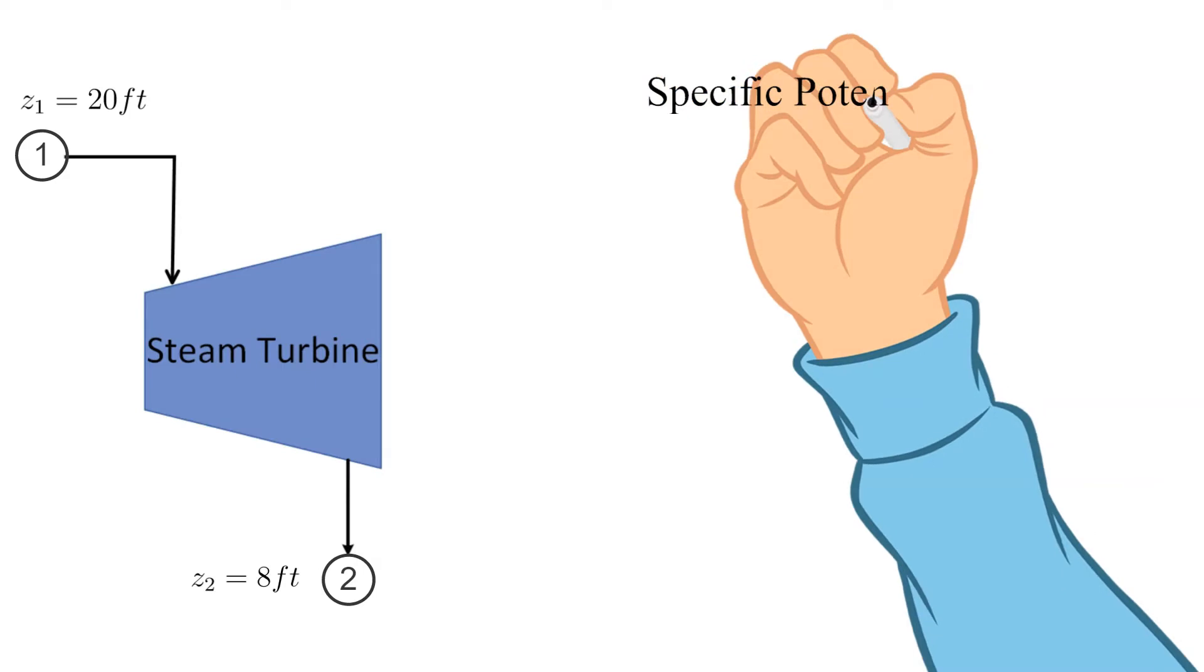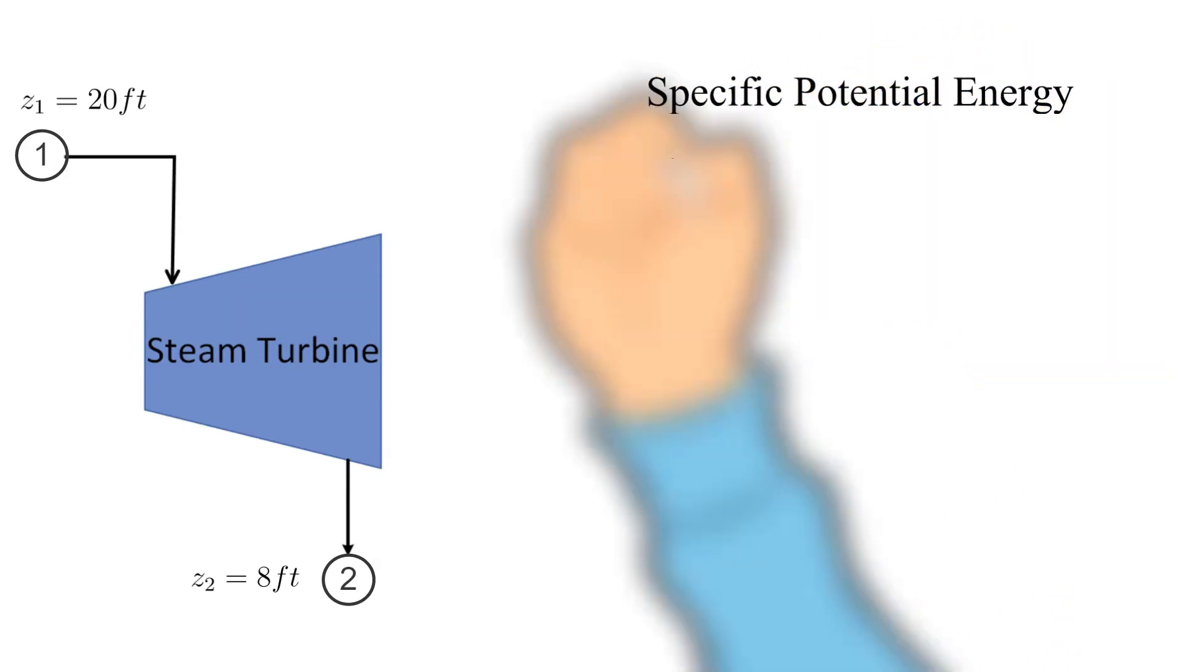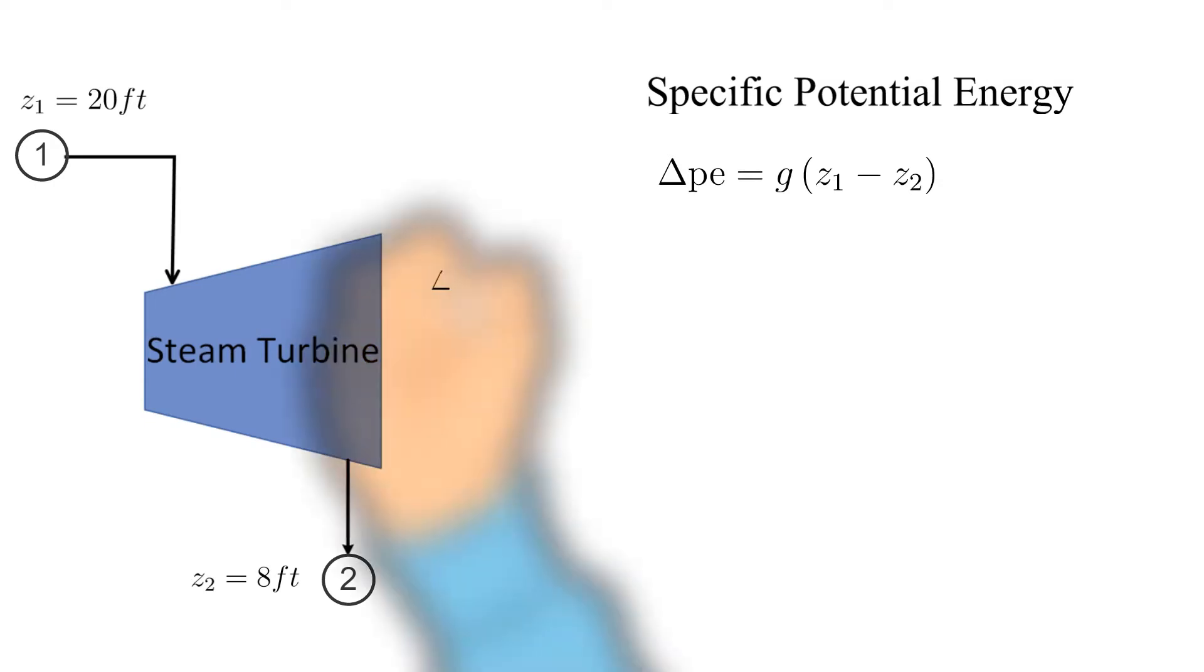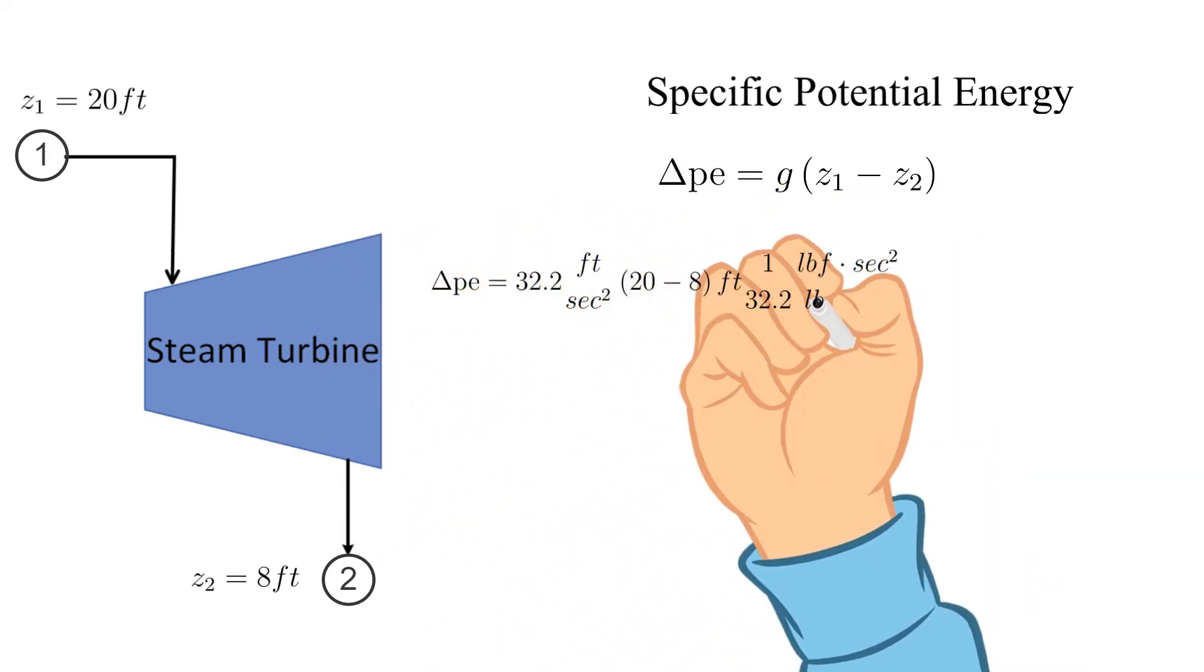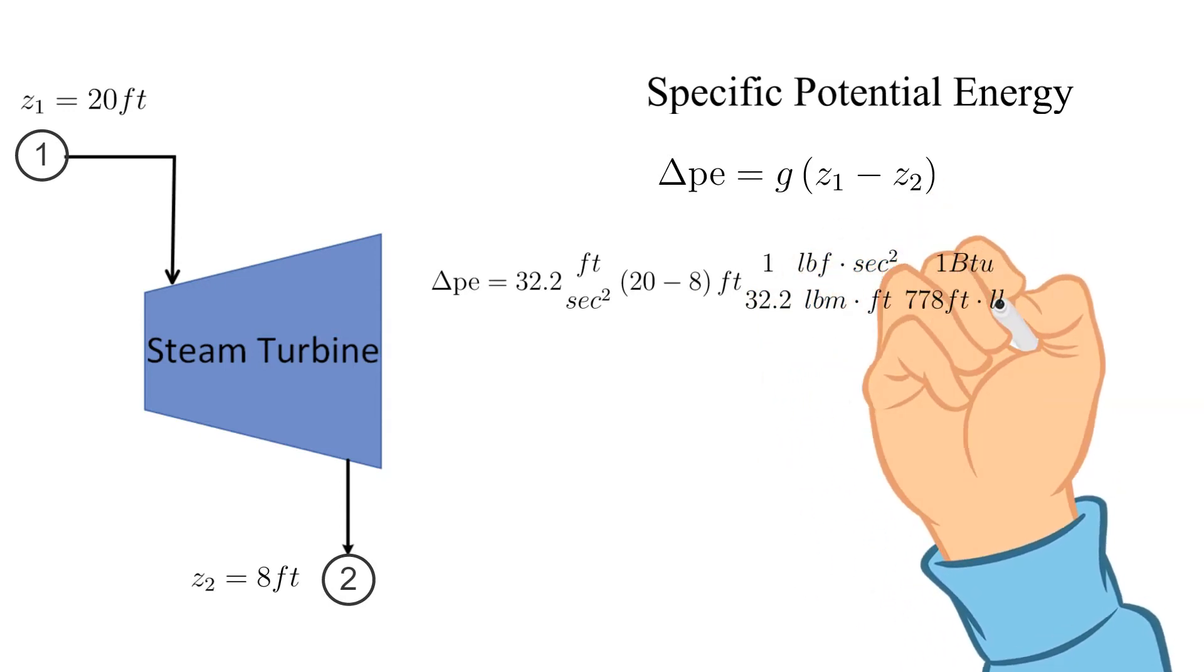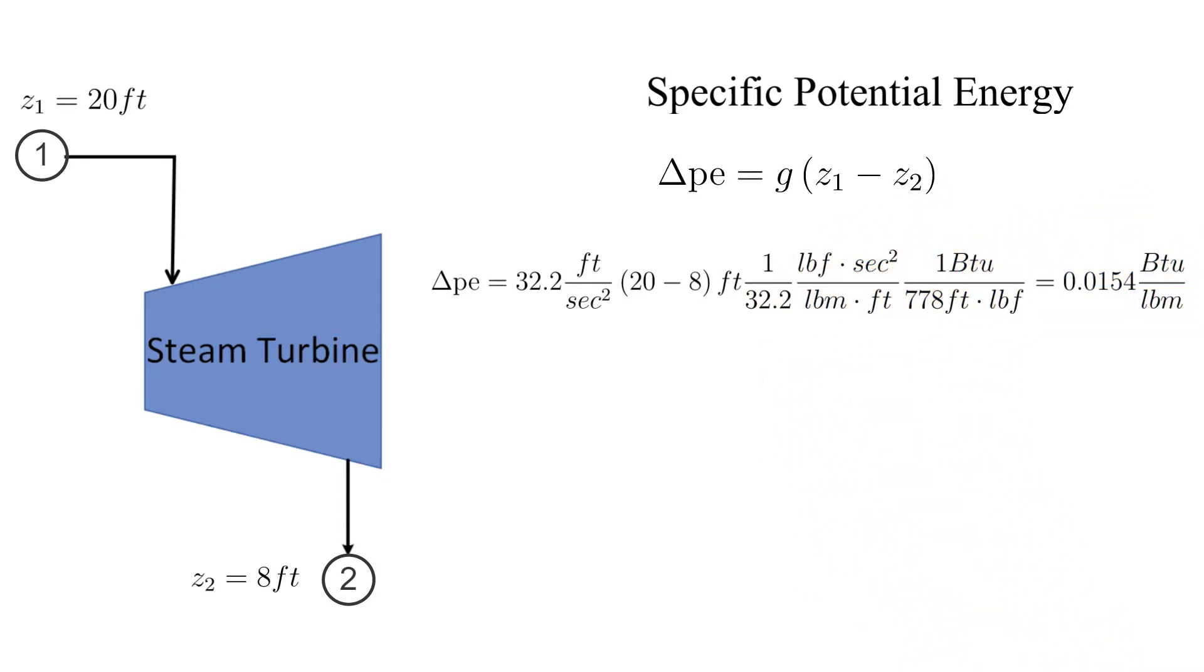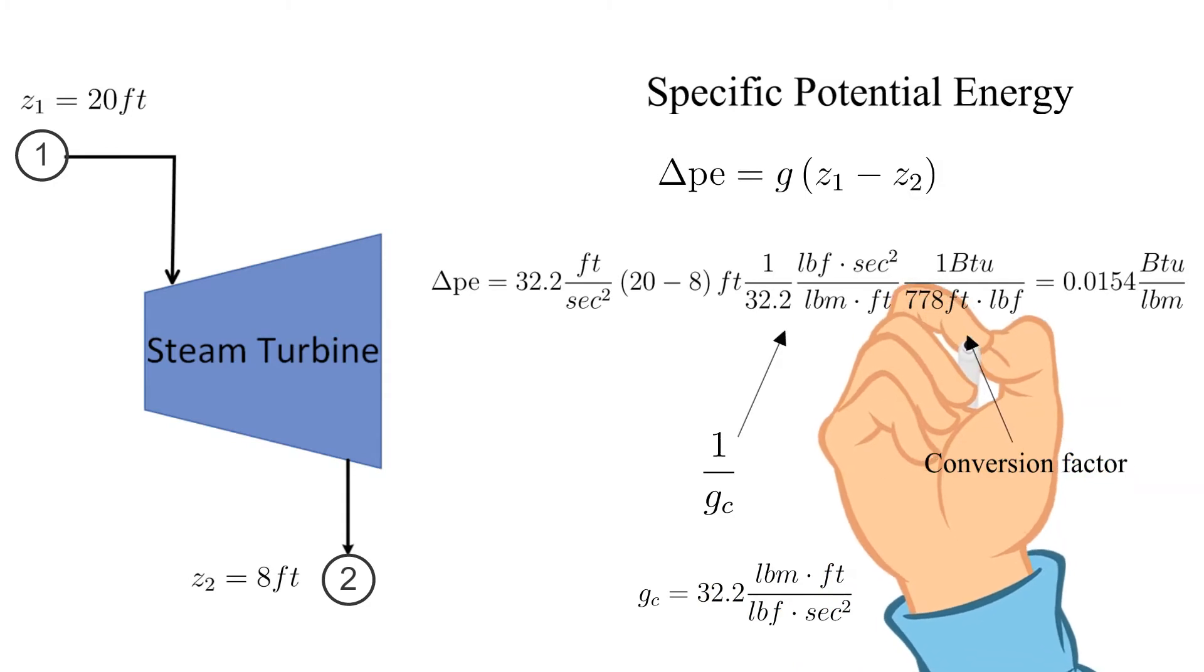Next is specific potential energy. Although multiplying the acceleration of gravity, g, times the elevation difference is a simple equation, it is fairly involved to achieve the desired units. Note the use of the gravitational constant, g_c, or more appropriately 1 over g_c. We are also converting from pounds force feet to BTU. For all that work, we get a pretty small value for the change in potential energy across the turbine.